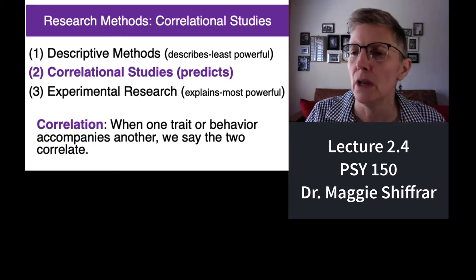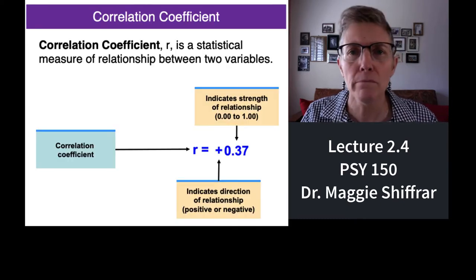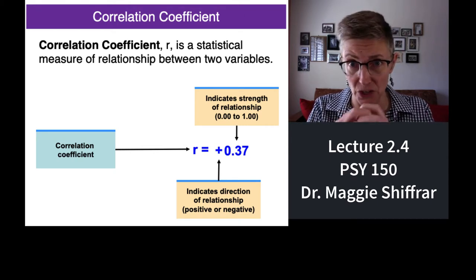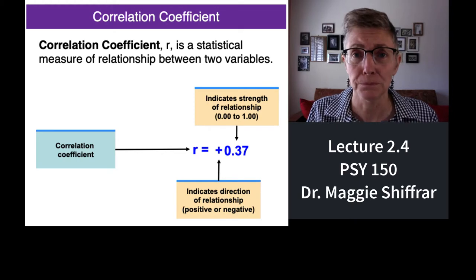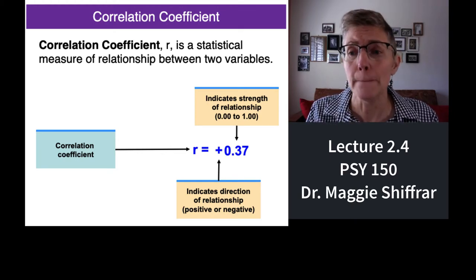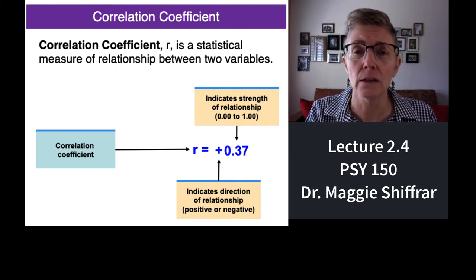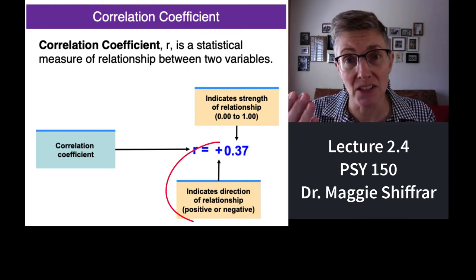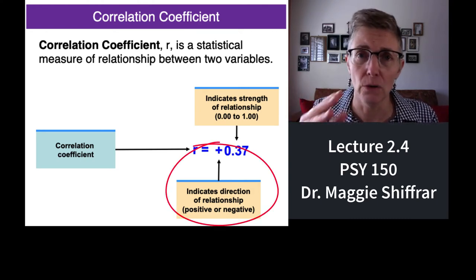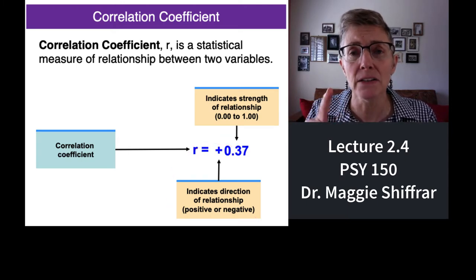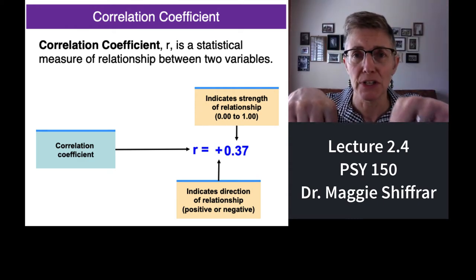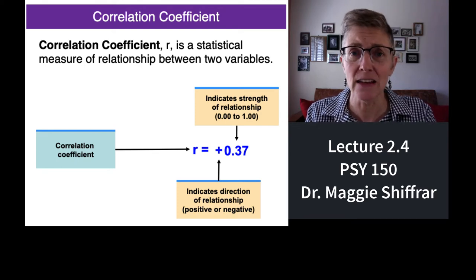They don't have to go in the same direction, but each one has to move at the same time. We measure correlations with something called a correlation coefficient — a number that tells us the strength of the association and also the direction of it. We refer to the correlation coefficient with a lower-case letter R. It can be positive, negative, or zero. When a correlation coefficient is positive, it means that the two variables move together — they both increase at the same time or they both decrease at the same time.